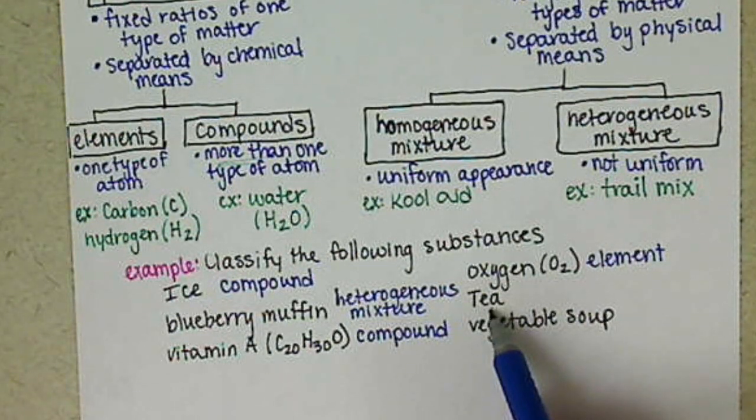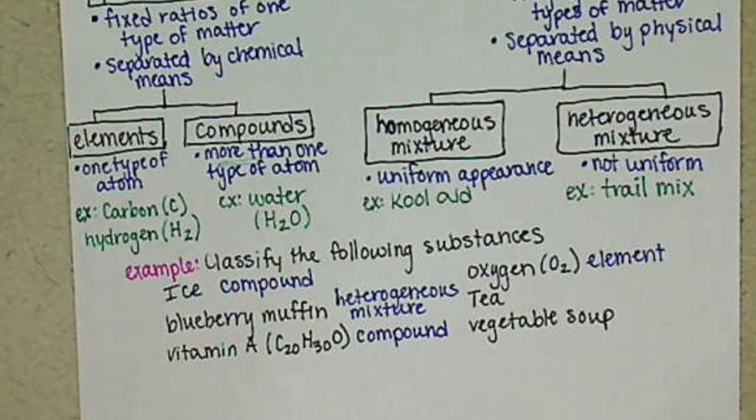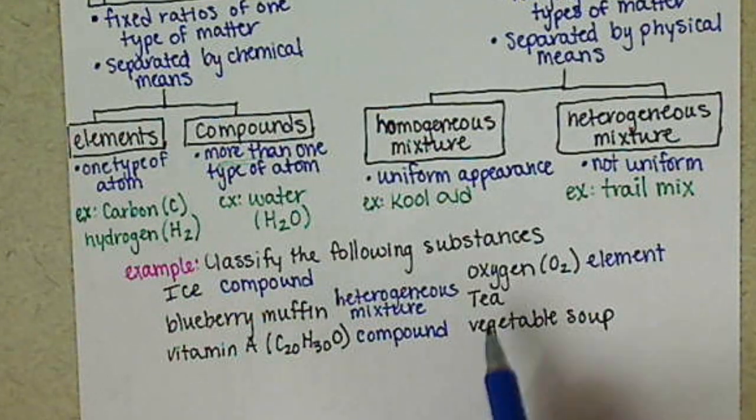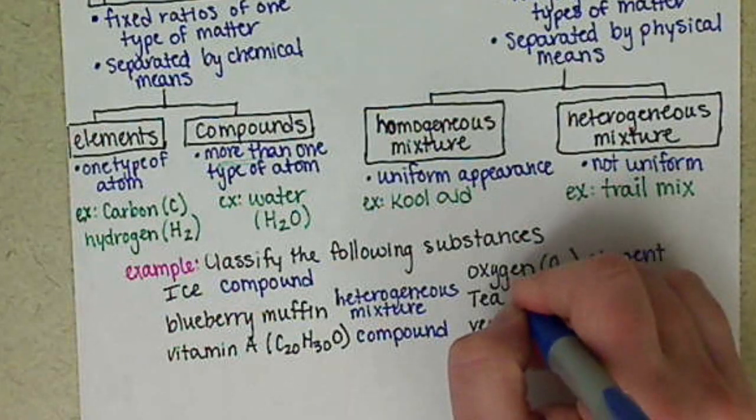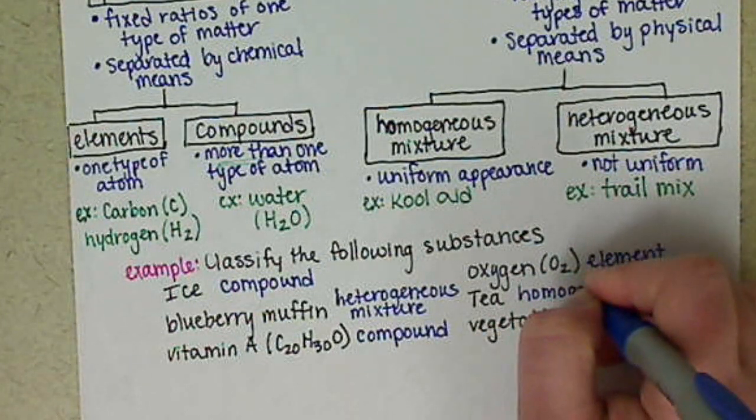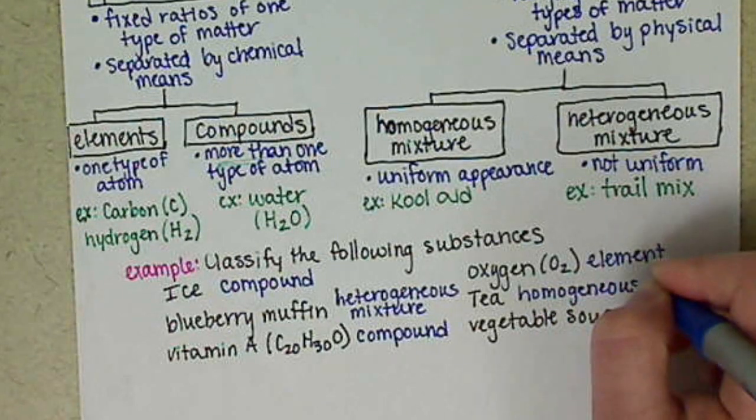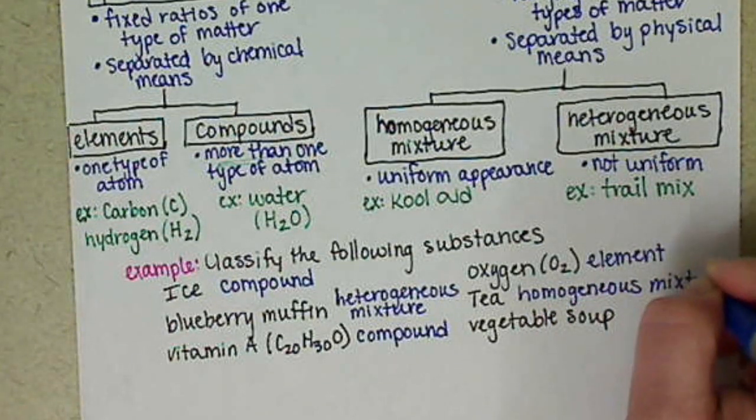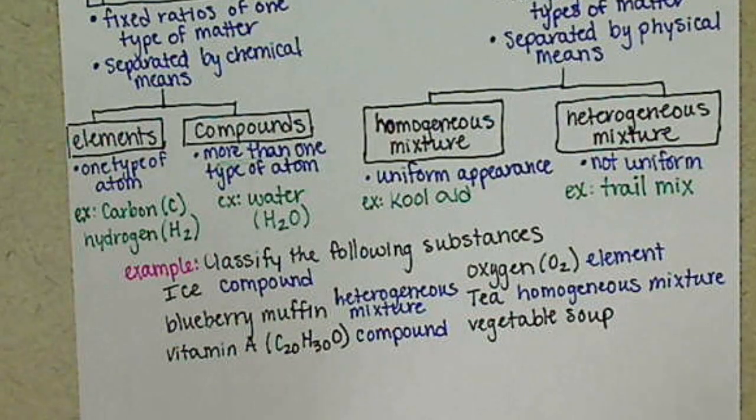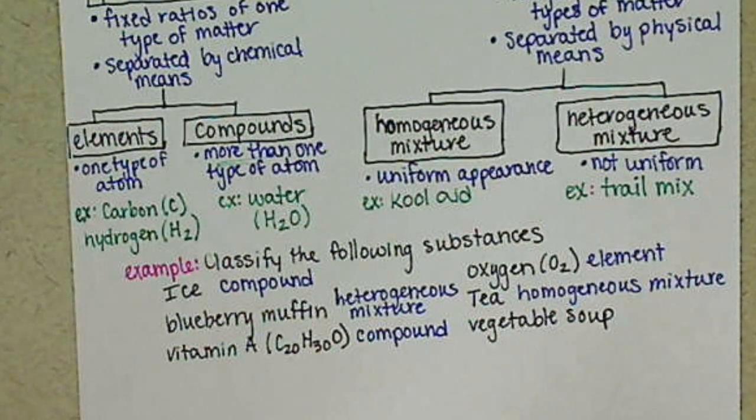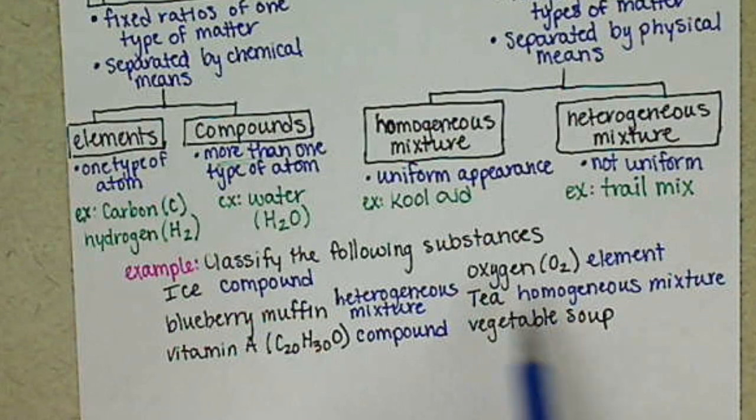For the tea, if you're thinking about basically kind of brewed tea is what I would think when I read this word tea, I would think of this as a homogenous mixture. Now, if you took this tea to be the actual tea leaves all ground up together, then that would be a heterogeneous mixture because you have different size of tea leaves, you have maybe a mixture of tea leaves in there. So sometimes these can be open to interpretation.